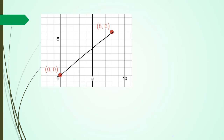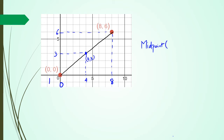Looking at this picture you can kind of see that the midpoint is somewhere here, which happens to be (4, 3). How do I get this? I look at the x values first — I've got 8 and 0, and half of 8 is 4, so that's the x coordinate of the midpoint. On the y side I've got 6 and 0, half of 6 is 3. So the midpoint AB equals (4, 3).